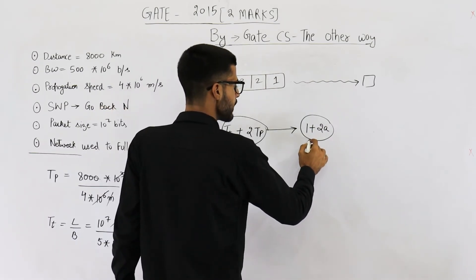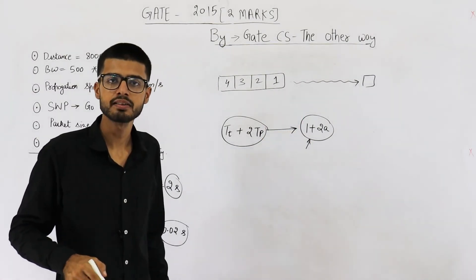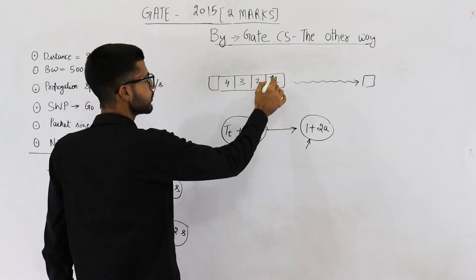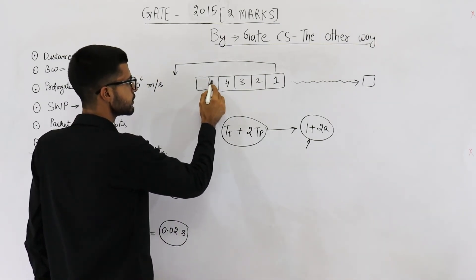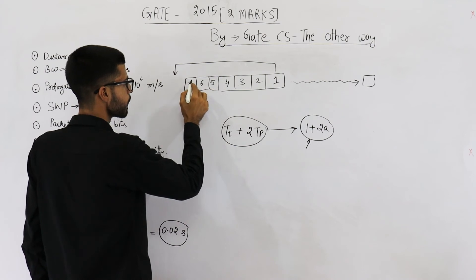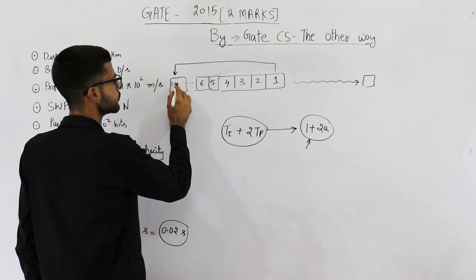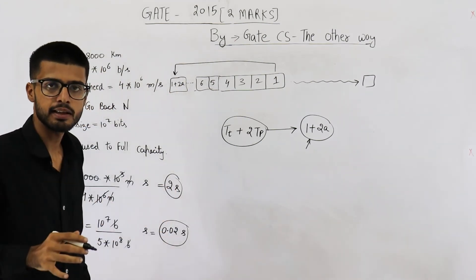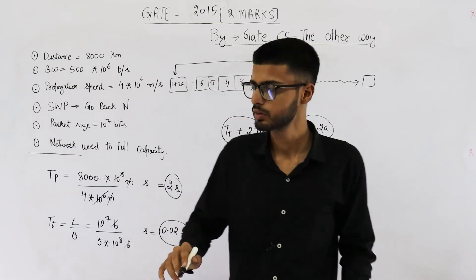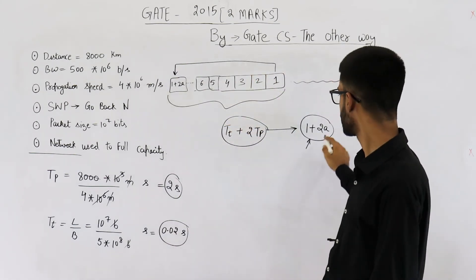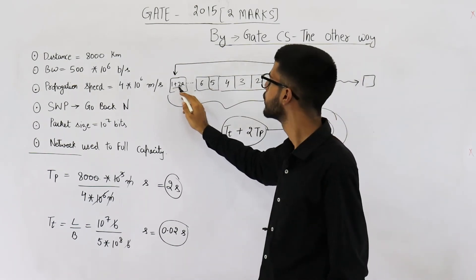All of these packets have been sent. None of them have been acknowledged. That means we need to save all of these packets in the window at sender. You are continuously sending the packet. Suppose its acknowledgement is received somewhere here. Till this time, you are just sending these packets, and this will be so on till 1 plus 2a. That means at any time, you can have a maximum of 1 plus 2a unacknowledged packets. This much must be the size of window at sender side, because these many unacknowledged packets can be present at any time.